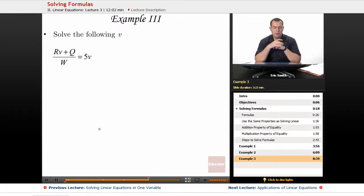Alright, this one's a little bit different. We want to solve the following for v, and the reason why this one is different is I have a v over here, but I also have another v sitting over there.